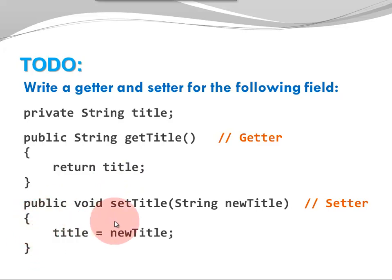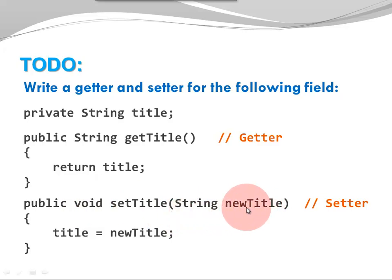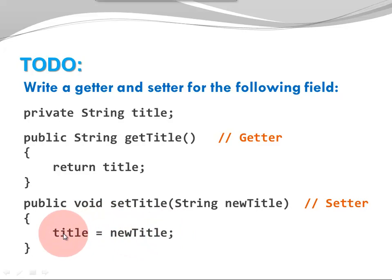Here is my setter. Notice the name — 'setTitle', the prefix 'set'. Doesn't return anything — return type void. But it does have one parameter. The parameter provides the new value for my field. I call it 'newTitle' and I'm using this newly provided value to assign it to my field. The field has to be on the left-hand side of my assignment operator, and the parameter type has to match the field type.